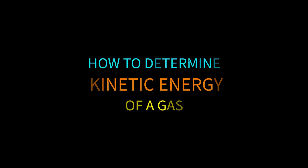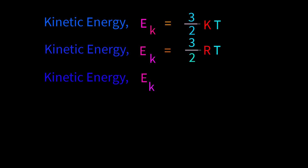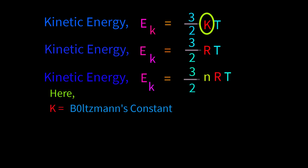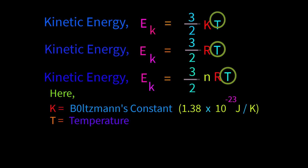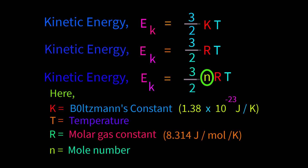Dear students, today we will learn how to determine the kinetic energy of a gas. There are several equations: Ek equals 3/2 kT, and Ek equals 3/2 RT. Here k equals Boltzmann's constant, that is 1.38 times 10 to the power minus 23 joule per kelvin. T equals temperature. R equals molar gas constant, that is 8.314 joule per mole per kelvin. And n equals mole number.